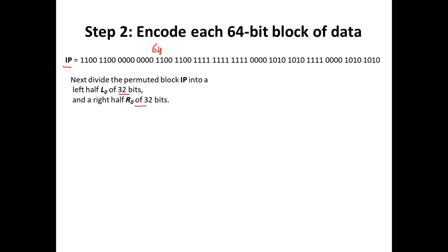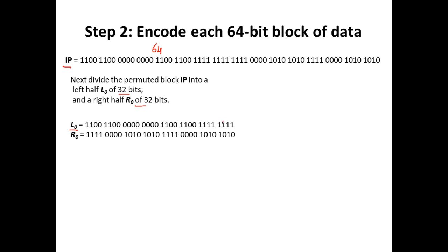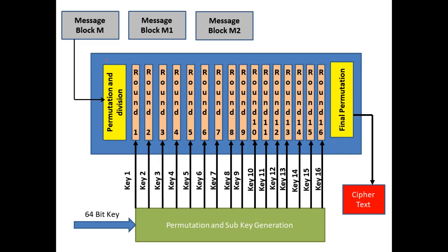The next step: we take this permuted output and divide it into two halves, each of 32 bits. The entire size is 64 bits, so we divide it as L0, which is 32 bits, and R0, which is 32 bits. We have now finished Phase 2 — taking a message block of 64 bits, applying the IP permutation table, and dividing into two equal halves of 32 bits each.